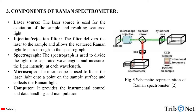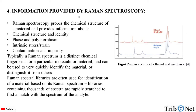Here in this figure we can see the schematic representation of the Raman spectrometer. Raman spectroscopy probes the chemical structure of a material and provides information about chemical structure and identity, phase and polymorphism, intrinsic stress and strain, and contamination and impurity. Typically, a Raman spectrum is a distinct chemical fingerprint for a particular molecule or material and can be used to very quickly identify the material or distinguish it from others. Raman spectra libraries are often used for identification of materials, with libraries containing thousands of spectra that are rapidly searched to find a match with the spectrum of the analyte.